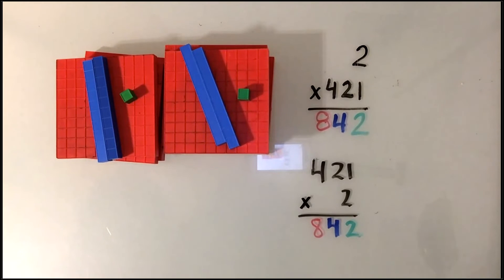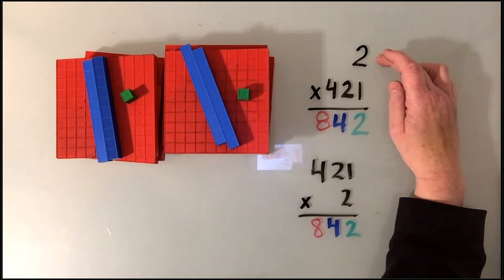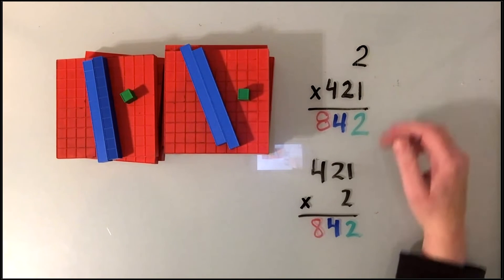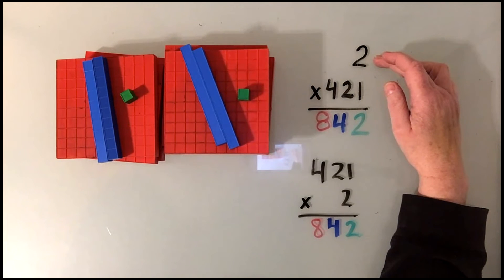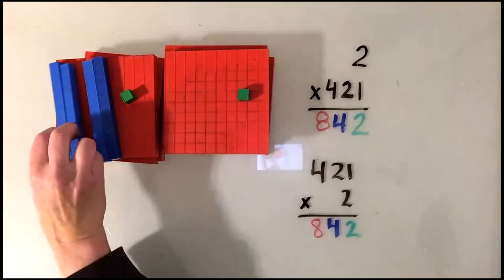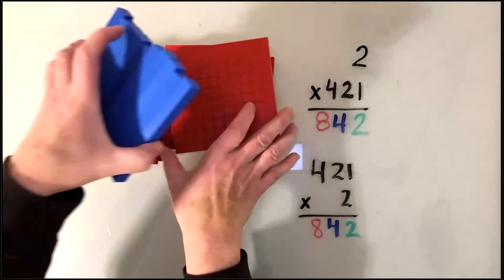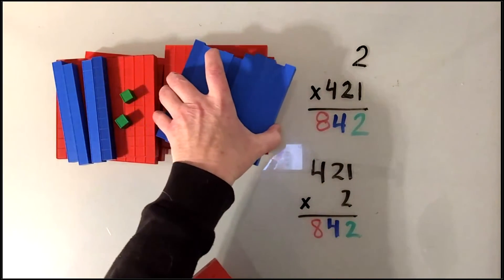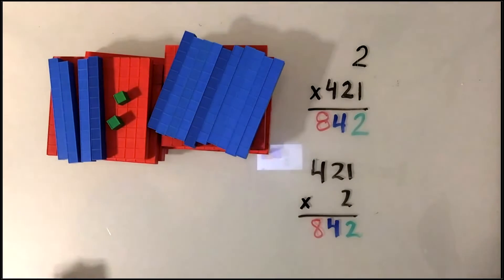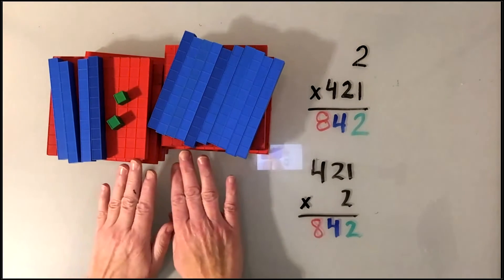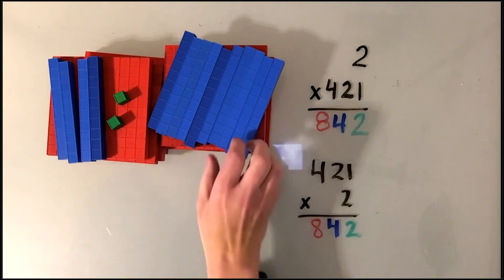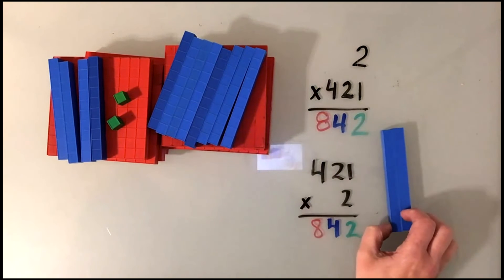If you would prefer to count twos instead of 421s, and you still want to do that rectangle as you did with the Basic Ops, you would need to trade each of your hundreds, your red hundreds here, in for ten tens, ten blue tens. And then that way it will enable you, once you've traded all of your hundreds in, to create a rectangle.